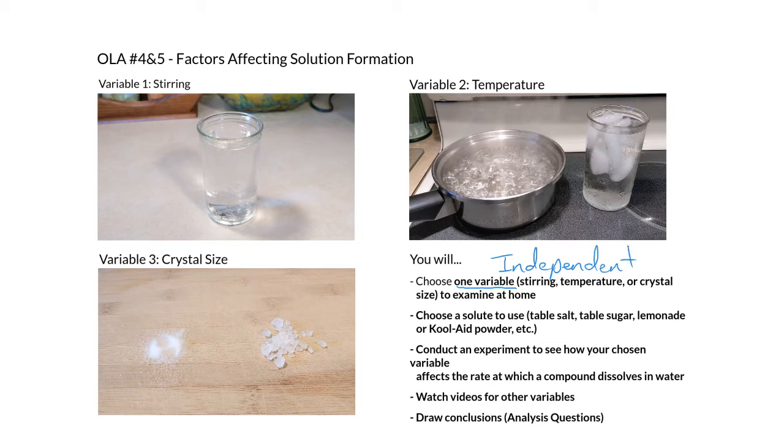That means the other two variables, whichever two you don't choose, are going to be your control variables. You'll try to keep them the same through each of your trials or tests. Once you choose your independent variable, which of these three you're going to change, then you need to choose a solute to use.